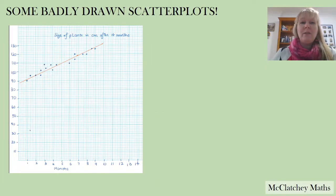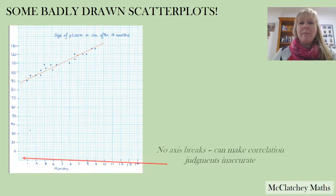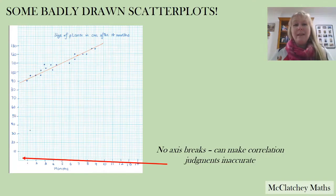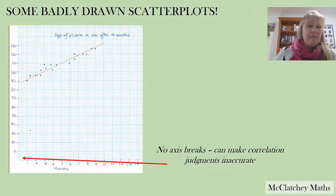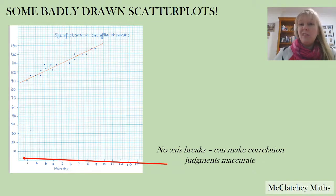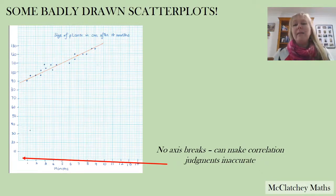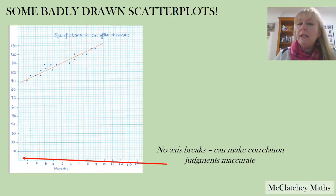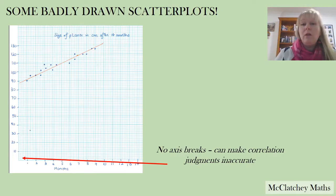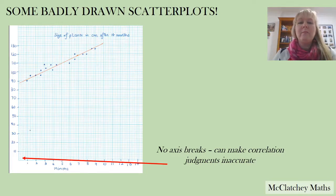In this example, all of the data is bunched right up the top. There are no axis breaks, and we should have started the data around 80 on the y-axis to spread the scatterplot down. The data on the x-axis actually spreads right across 1 to 10, so we don't need an axis break there, but we definitely need one on the y-axis. By spreading out that data more, we can get a better idea of what the correlation actually looks like.